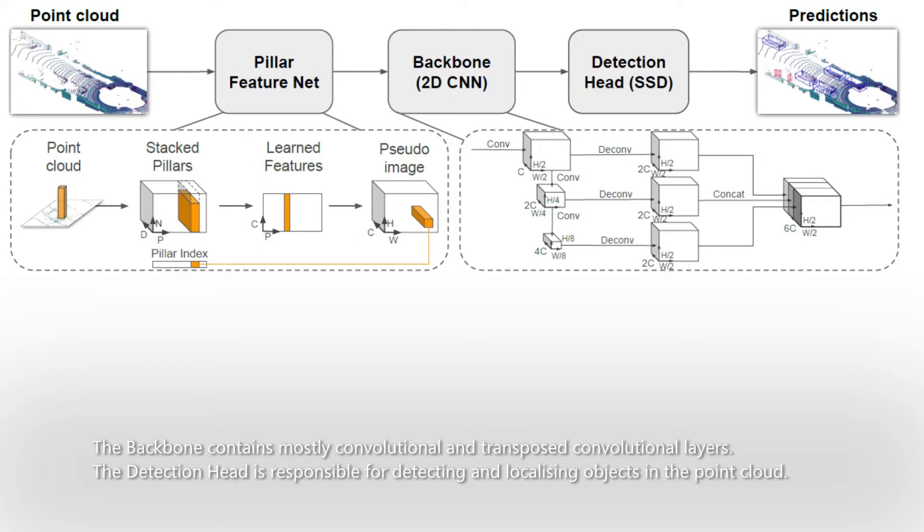The backbone contains mostly convolutional and transposed convolutional layers. The detection head is responsible for detecting and localizing objects in the point cloud.